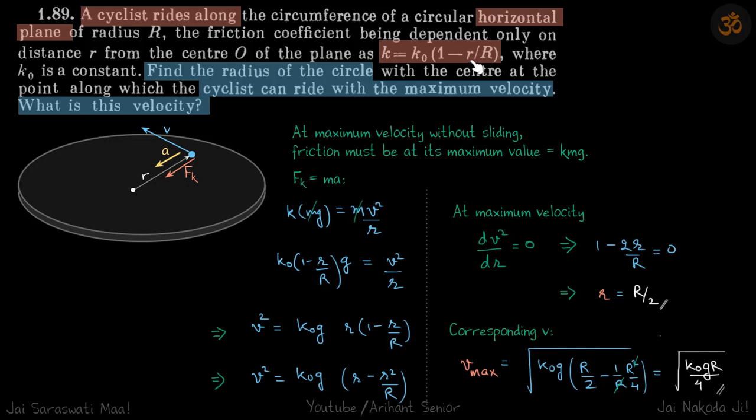As small r approaches capital R, the surface becomes quite frictionless. At the center it is very rough, and at the edge of this path it becomes very slippery. We need to find the radius of the circle where the cyclist can ride with maximum velocity and what is this velocity.